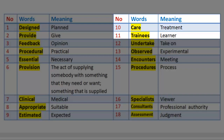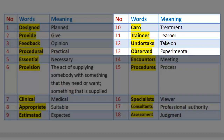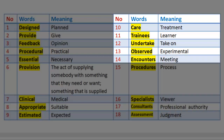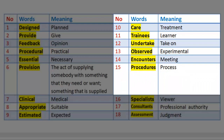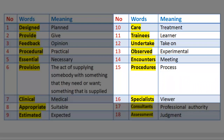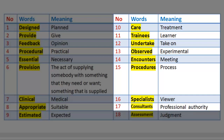Number 11: Trainees — meaning learner. Number 12: Undertake — meaning take on. Number 13: Observed — meaning experimental. Number 14: Encounters — meaning meeting. Number 15: Procedures — meaning process. Number 16: Specialist — meaning viewer. Number 17: Consultants — meaning professional authority.